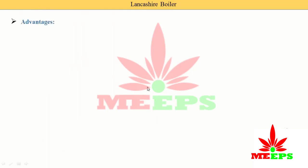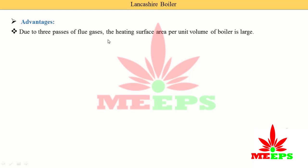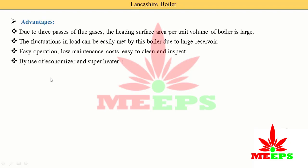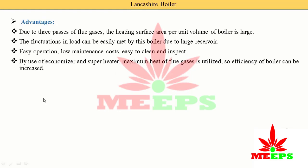Advantages of the Lancashire boiler: due to the three-pass flue gas path, the heating surface area per unit volume of the boiler is large, enabling better heating. Fluctuations in load can easily be met due to the large water reservoir. It is easy to operate, has low maintenance cost, and is easy to clean and inspect. By using an economizer and superheater, maximum heat of the flue gases is utilized, increasing boiler efficiency.